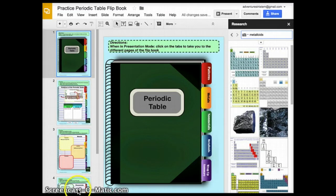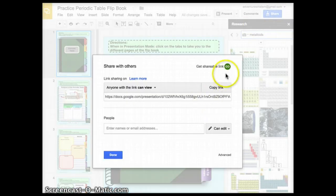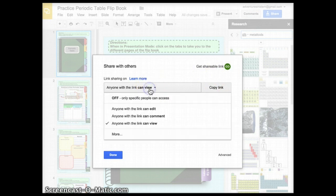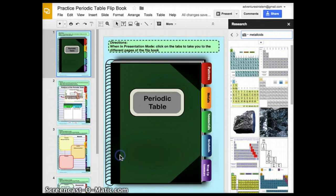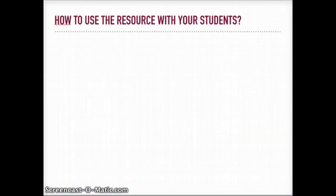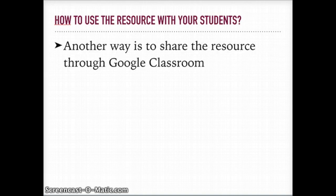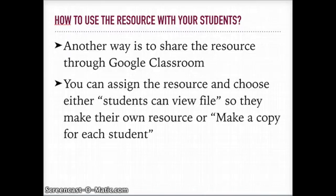You can get your shareable link in the top right corner where it says Share — just click on that blue button. Here you want to make sure that it says 'can view,' not 'can comment,' not 'can edit,' but 'can view.' Another way you can use your resources with students is through Google Classroom. You can assign the resource and choose either 'students can view file' so they can make their own copy, or 'make a copy for each student.'